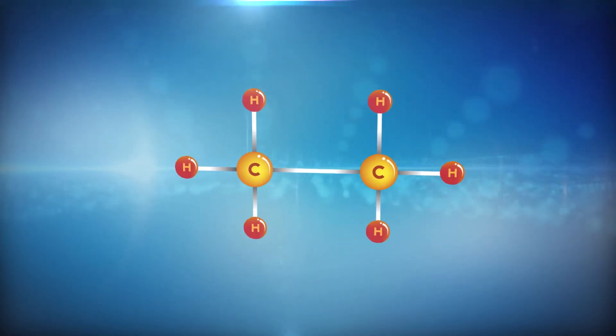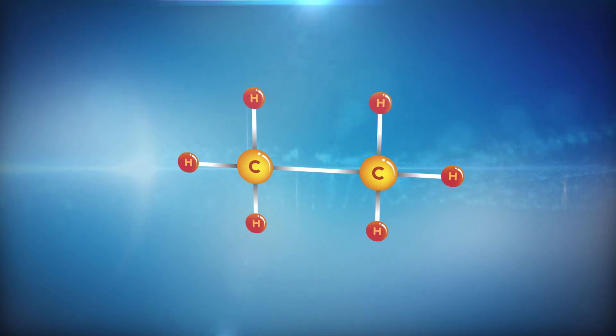If we look at the structure of ethane, it consists of two carbon and six hydrogen atoms. Each carbon atom is bonded by three carbon-hydrogen sigma bonds and one carbon-carbon sigma bond.